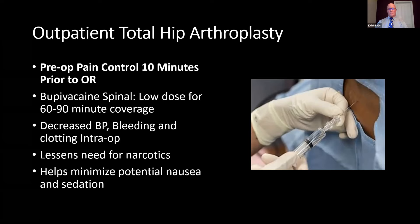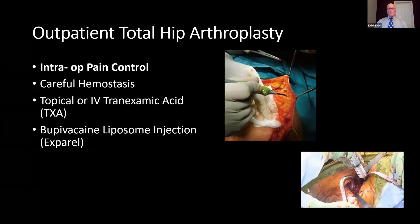The spinal also lessens the need for narcotics and helps minimize the potential for nausea and post-op sedation. Intraoperatively, careful hemostasis and meticulous tissue dissection is needed to lessen bleeding. We also use either topical or IV tranexamic acid, and towards the end of the case, we typically inject a bupivacaine liposome injection that hopefully lasts at least two or three days to provide additional pain control.